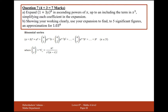So, expand 1 plus 3x to the power of 8, including all the terms up to x cubed, simplifying your coefficients in the expansion. What I want to do is expand 1 plus 3x to the power of 8. Lining this up with a plus b to the power of n, this gives a as 1, b as 3x, and n as 8.